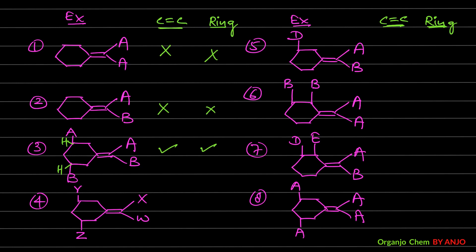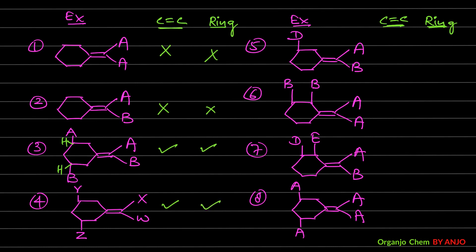Example 4: The SP2 ends of the alkene both have different groups according to CIP rules, so GI is possible from C=C. For the cyclic part, one carbon has Y and H, another has Z and H — both have two different groups. So this molecule can show GI from both the C=C double bond and the ring.